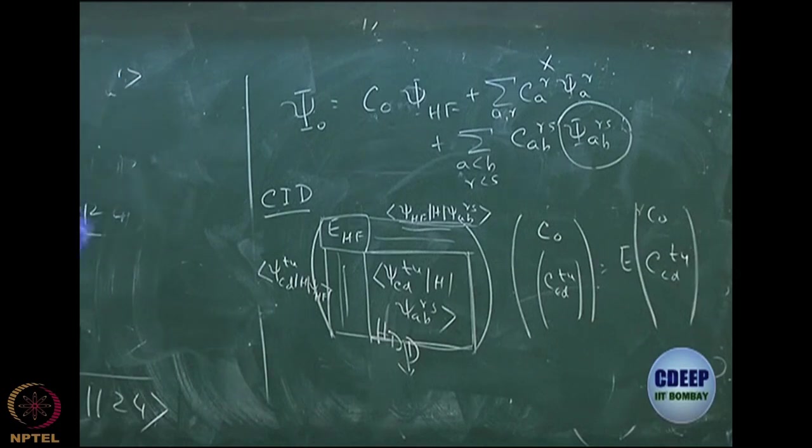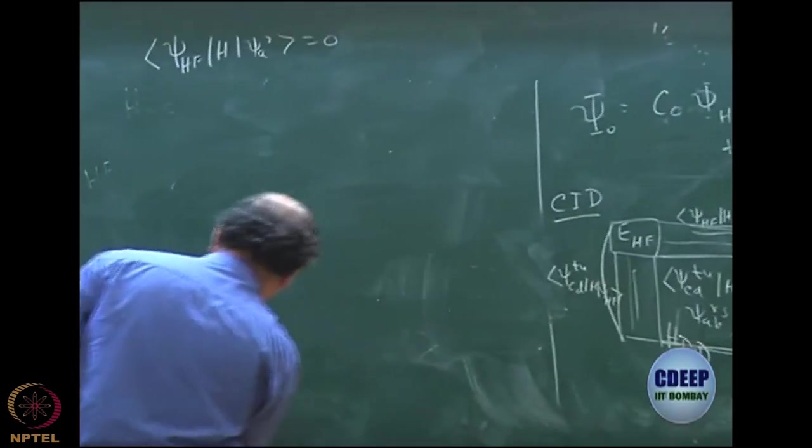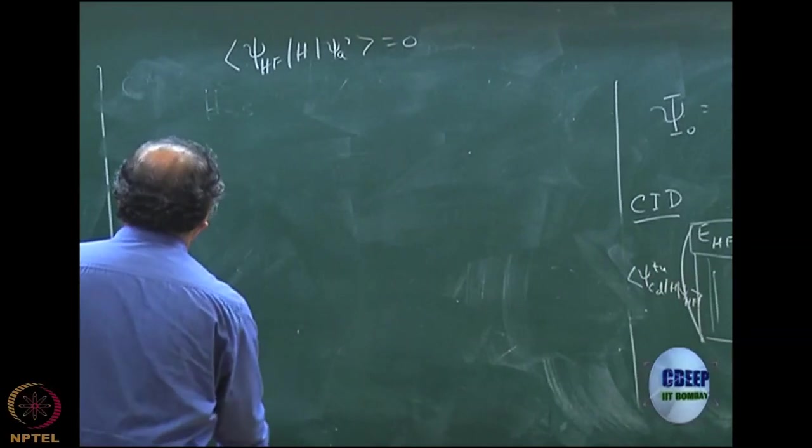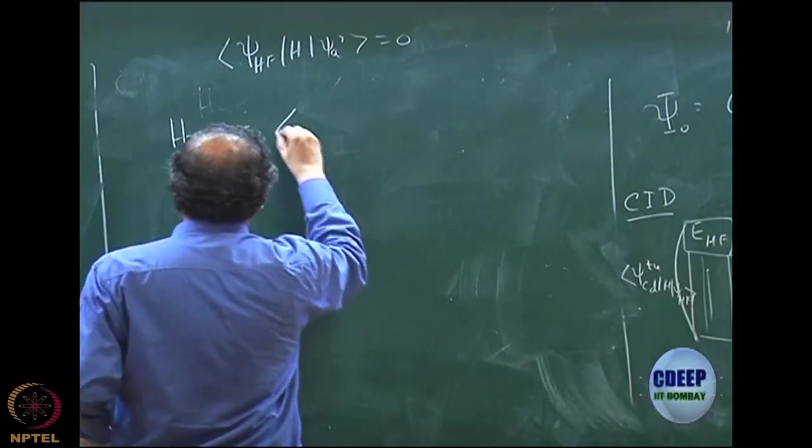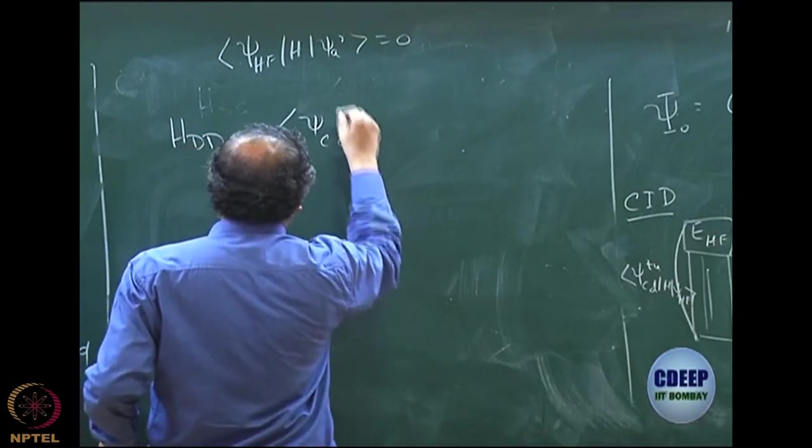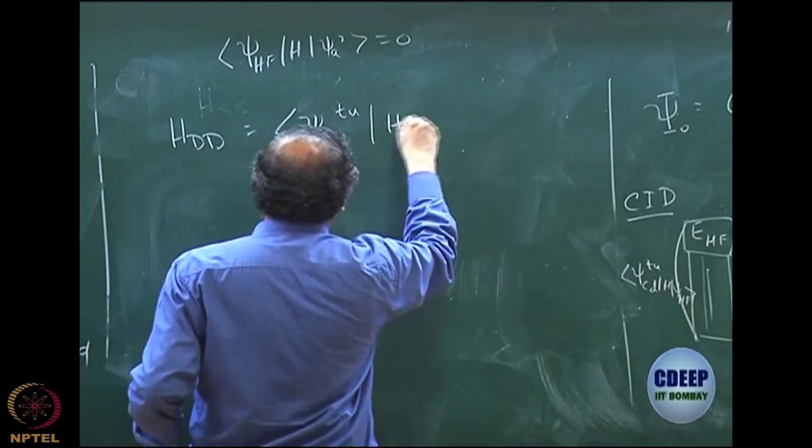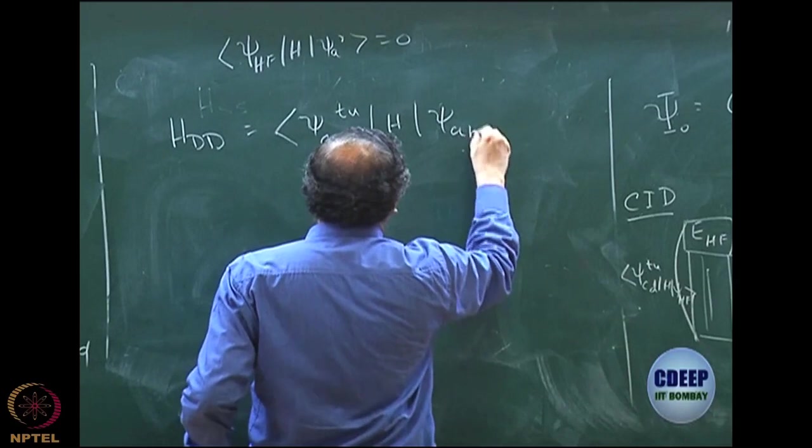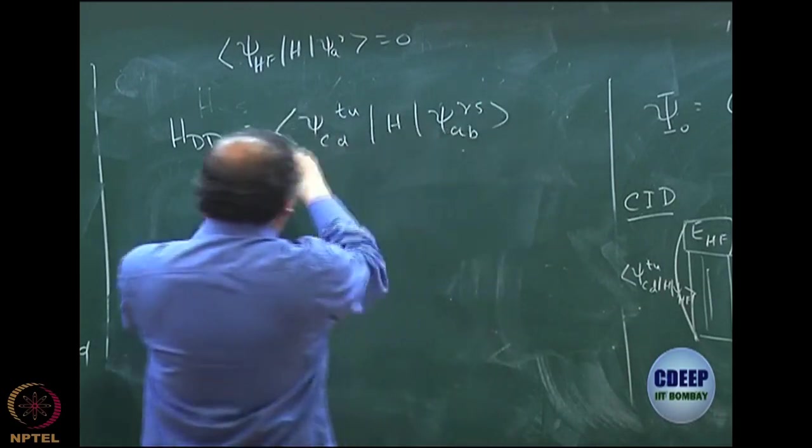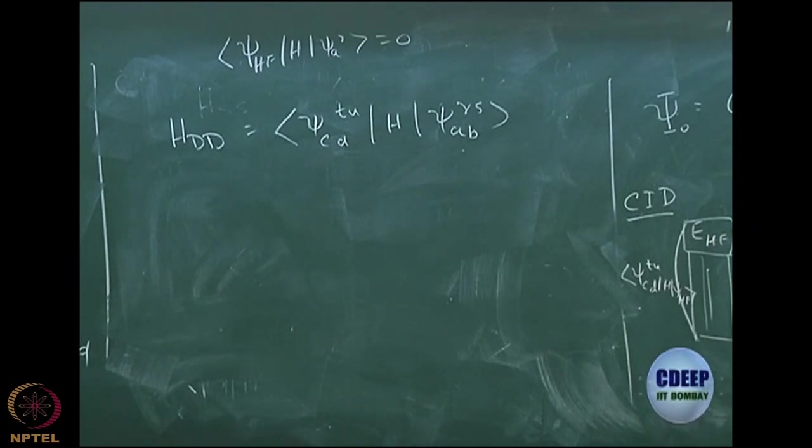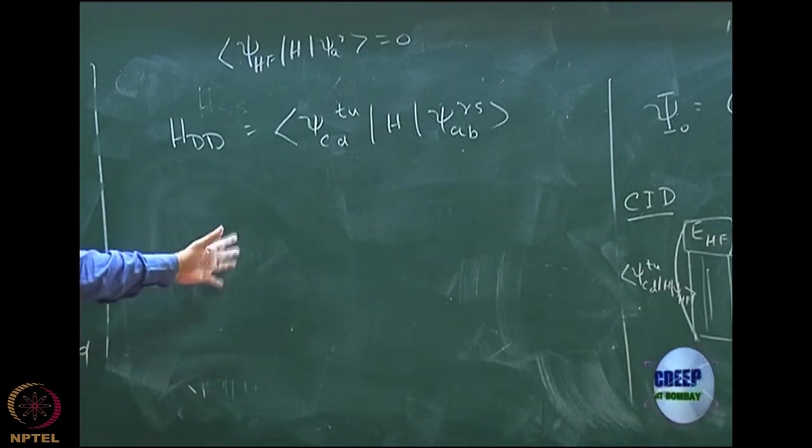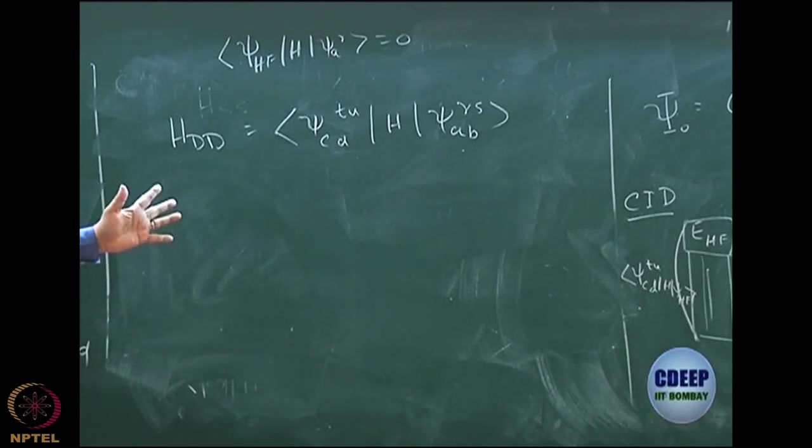I have H doubles, which is psi CDTU, one of the doubly excited determinants, H with another doubly excited determinants. Of course, eventually there will be a sum to get an eigenvalue equation, but I am just looking at this matrix a little. Now you can see even by Slater rule, lot of integrals will vanish, even by Slater rule. And lots of integrals will remain of course by Slater rule.